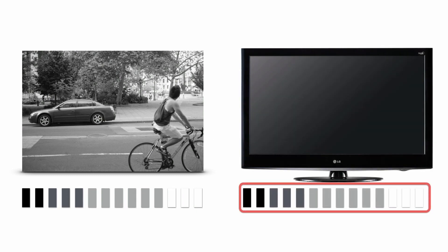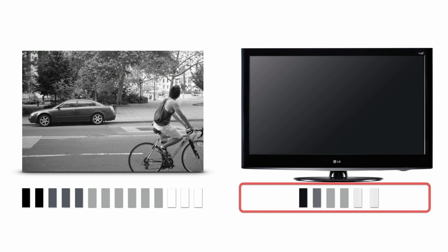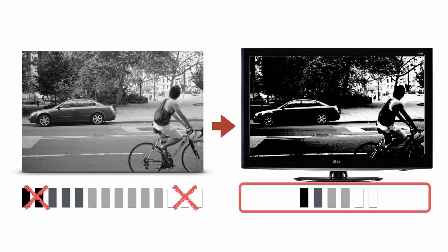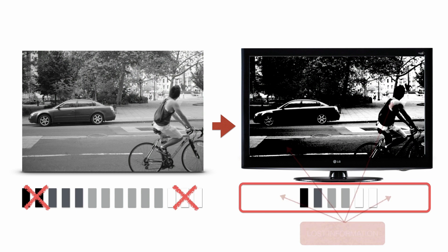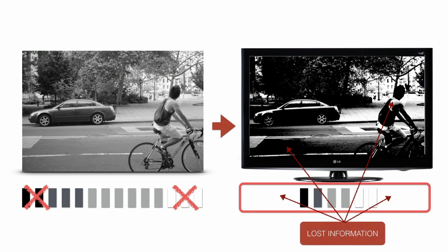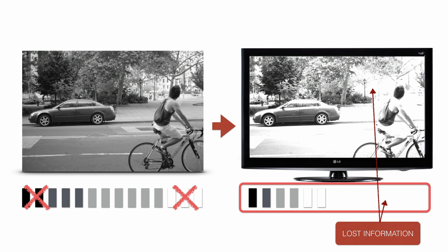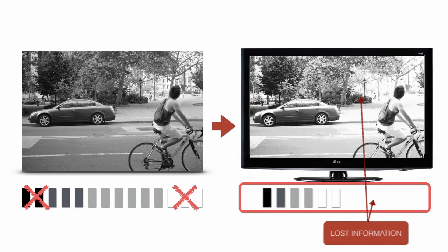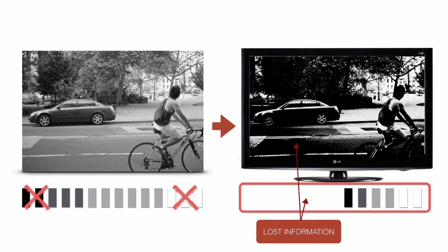You would assume a TV can display all this information — unfortunately not. TVs have a very limited dynamic range of around six stops. So if we try to display a high dynamic range image on a TV, we lose a lot of information in the highlights and shadows, ending up with a very contrasty image. If we try to compensate for shadows, we lose information in the highlights, and if we compensate for highlights, we lose information in the shadows.